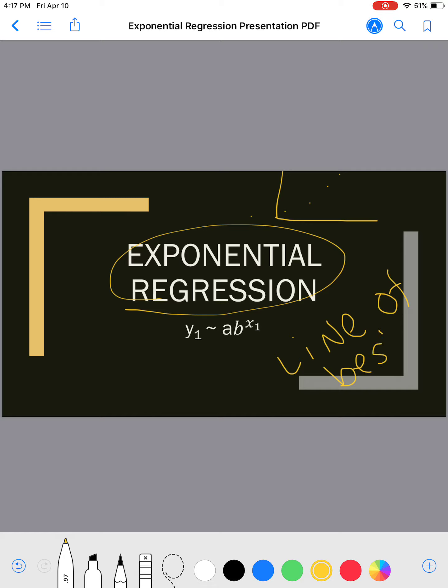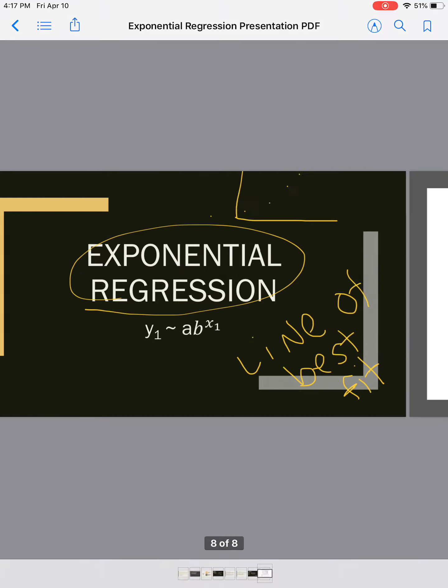So, what I put when I'm using Desmos is I put in my table. I would add the table and put in, after that, Y1 squiggle A times B to the power of X1. When I do that, it will give me my A and my B value. And then all I have to do is plug those two things in to get my exponential regression equation.